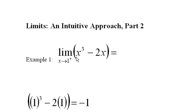In example one, we're looking for the limit of x³ - 2x as x heads to one from the right. We want to know what this function is getting closer and closer to. The most obvious approach is to just plug one in, and when I do that, I get negative one. So I suspect that this function is getting closer and closer to negative one.